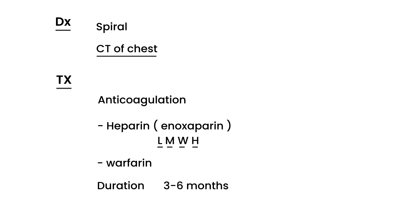Warfarin is given for a certain duration, usually three to six months. However, it can be lifelong if the patient has recurrent DVTs or hypercoagulability — as discussed with Virchow's triad — where the person has a known risk factor that is not modifiable. Since they will always have this hypercoagulability, they need to be on warfarin for life.